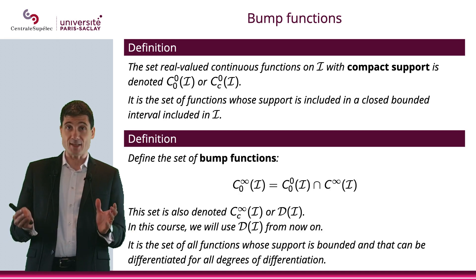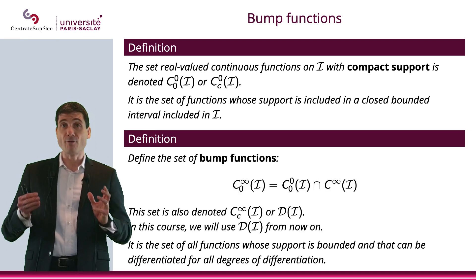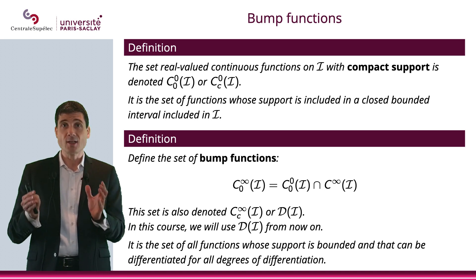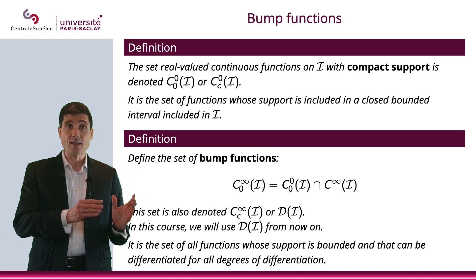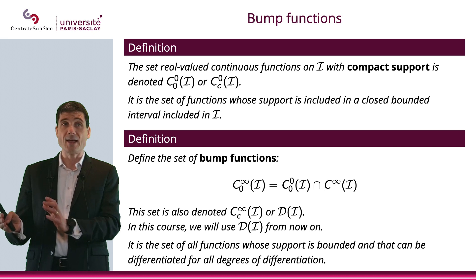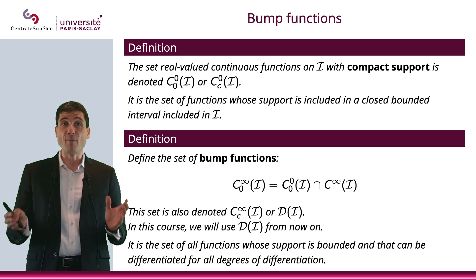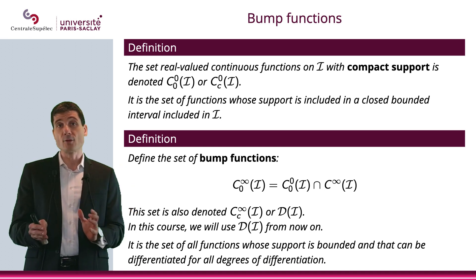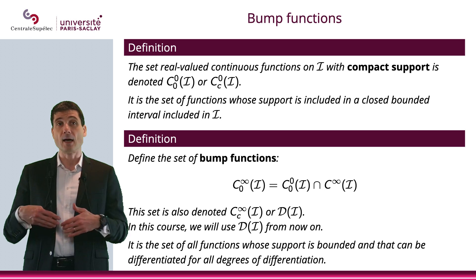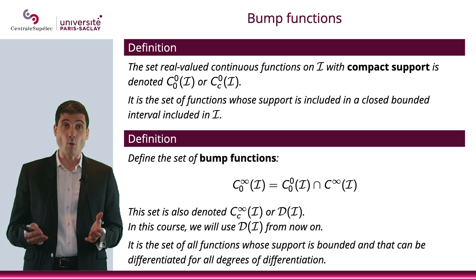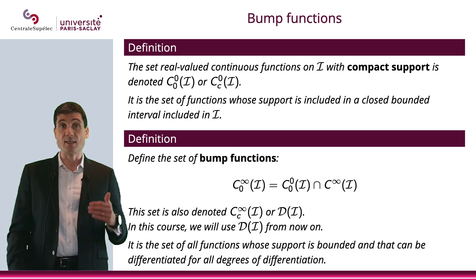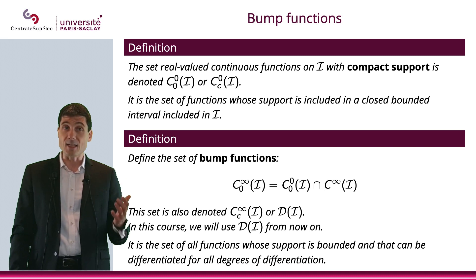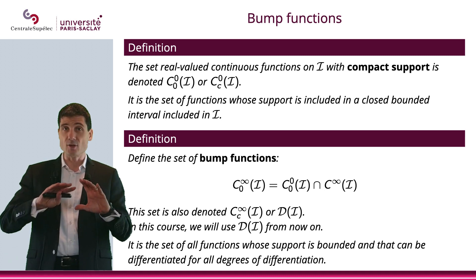That is not enough in a sense. I will actually require the function to be even smoother than continuous. I will ask the bump function to be C∞ and also to be with compact support. So basically, the set of bump functions is the intersection of C00 and the set of all functions that can be differentiated as many times as I want. That is denoted C0∞, or sometimes CC∞, or sometimes D.